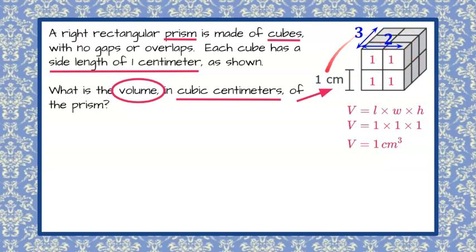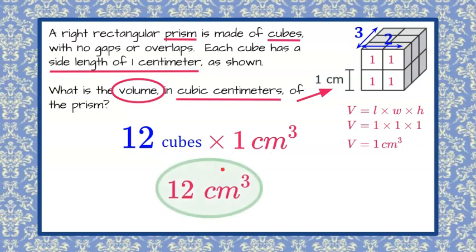So we have a total of twelve cubes. Three times two is six we can see these six and then the bottom layer is also six. So six and six is twelve. So this image, this right rectangular prism, is made up of twelve cubes. Well each cube has a volume of one centimeter cubed. So twelve times one is twelve centimeters cubed telling us the volume of the entire right rectangular prism is twelve cubic centimeters.